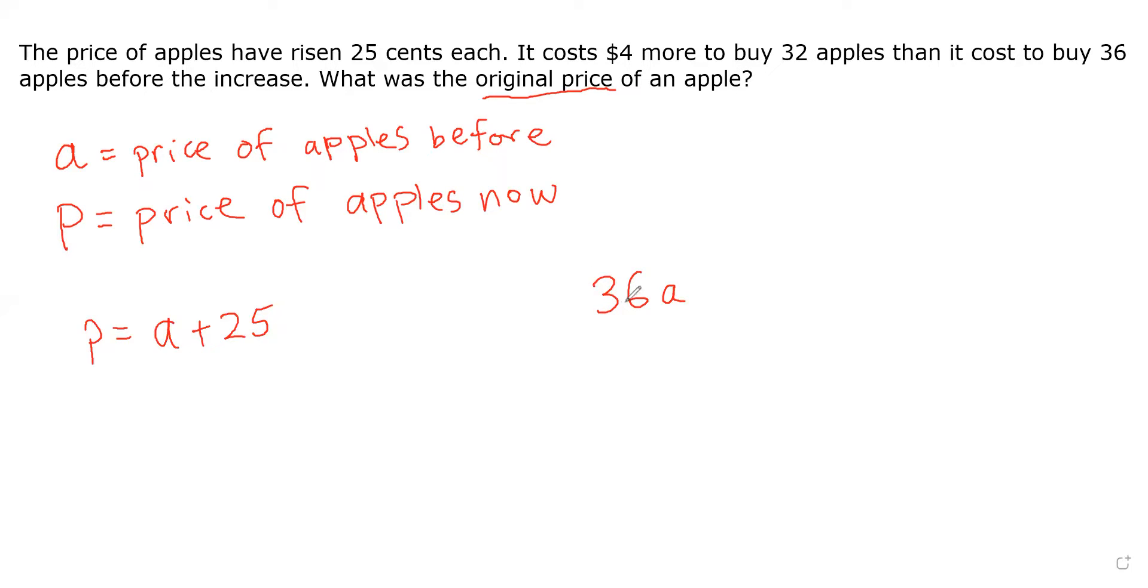If I add $4 to this, now what is $4 in terms of cents? There are 100 cents in $1, so $4 is 400. So the cost of 36 apples before the increase plus $4, which is 400. Because here we're dealing with cents, the A plus 25 is in cents, so we need to make sure that all of our money is in cents. The unit is cents.